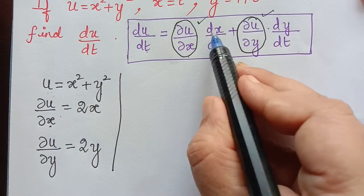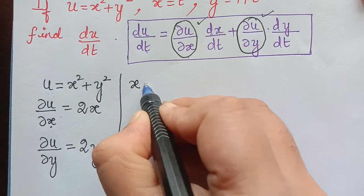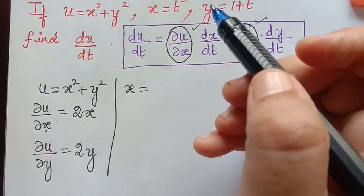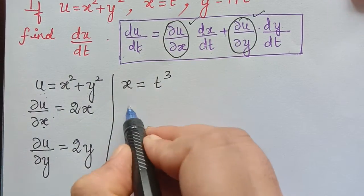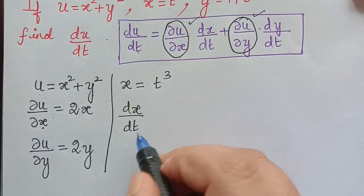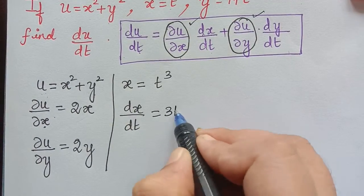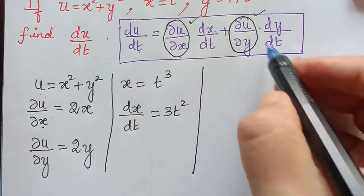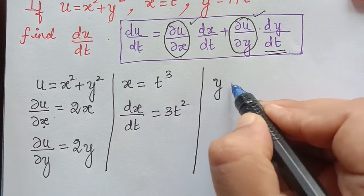Next, in the formula we need dx/dt. From the question, x is equal to t cube. Differentiating normally with respect to t gives dx/dt equal to 3t squared.